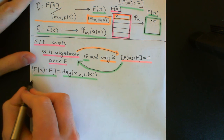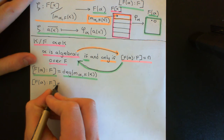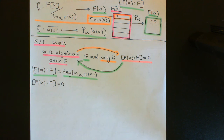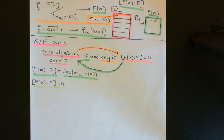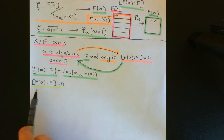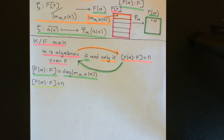We start with the assumption that the degree of the field generated by alpha over F is some finite value equal to little n. We're now going to show from this that alpha is an algebraic element over the smaller field capital F. To show that an element is algebraic over F, we need to show that there is some non-zero polynomial in the ring of polynomials over F which has alpha as a root.